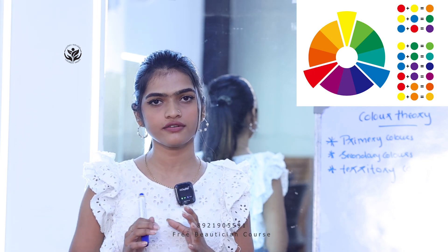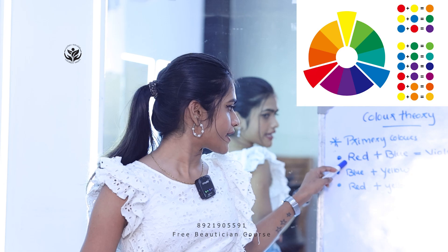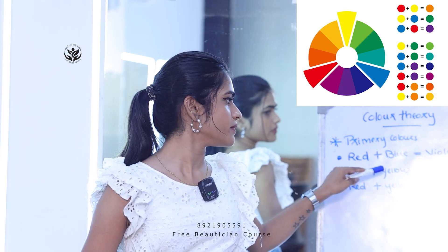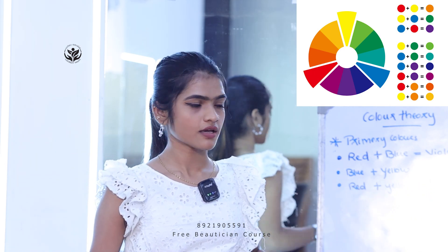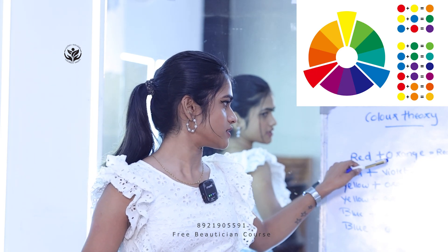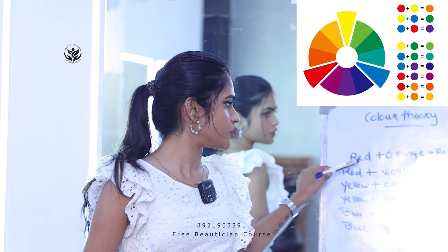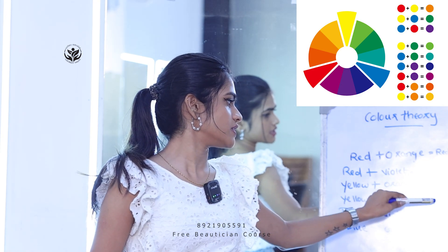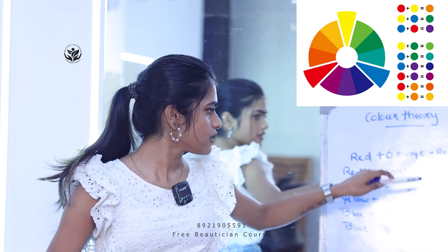The primary colors are mixed with secondary colors to form tertiary colors. Red and blue mix together, blue and yellow mix together, and red and yellow mix together. Red and orange, red and violet, yellow and orange, yellow and green, blue and green are the resulting mixed colors.